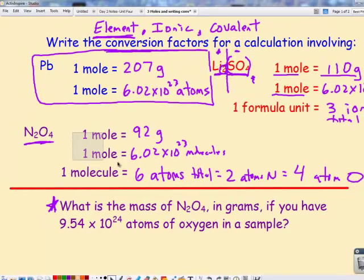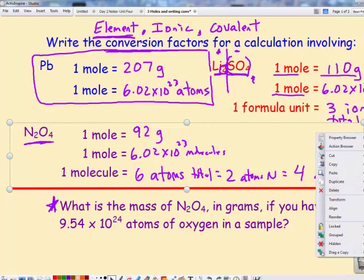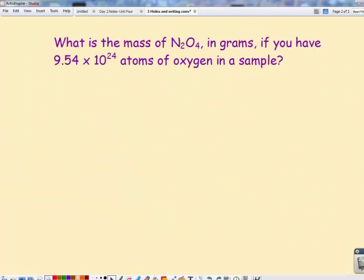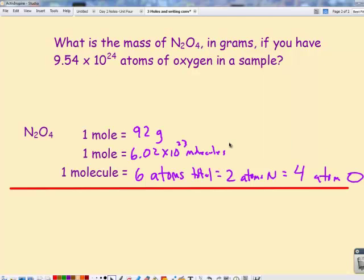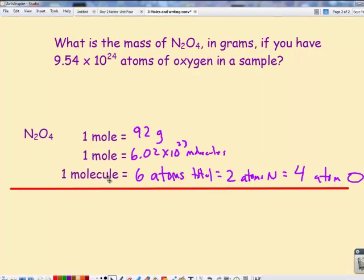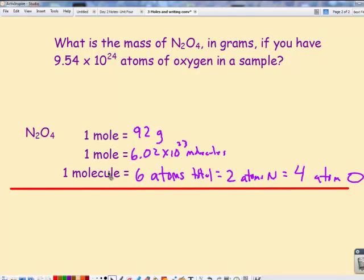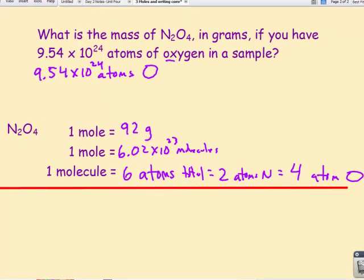Okay, so let me copy these. I'm going to go to the next page and paste them just so I can see them again. Okay, so here are my conversion factors that we just got. So now what I want to do is use these. Now this goes back to what we learned at the very start of the year, which is dimensional analysis. Notice what I'm starting with: nine point five four times ten to the twenty-fourth atoms of oxygen in a sample of N₂O₄. I want to know what is the mass of N₂O₄.